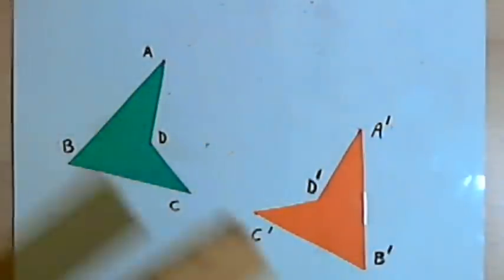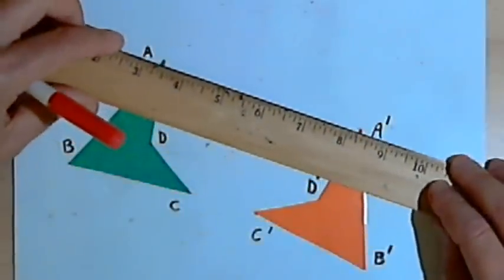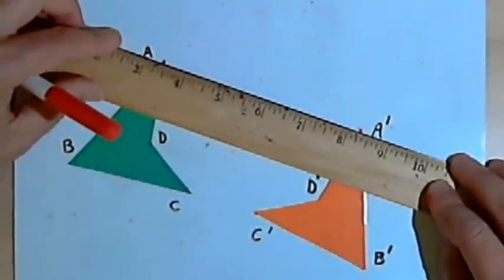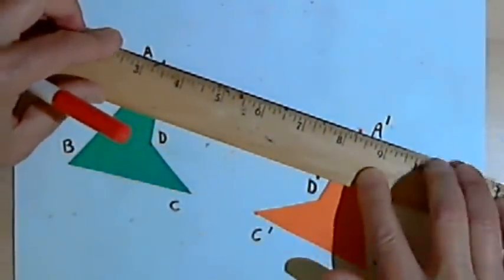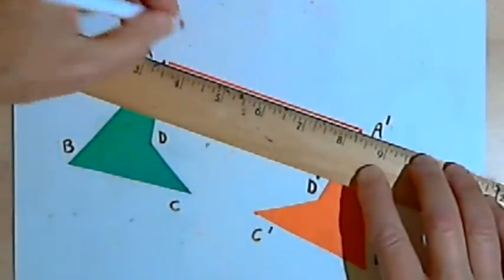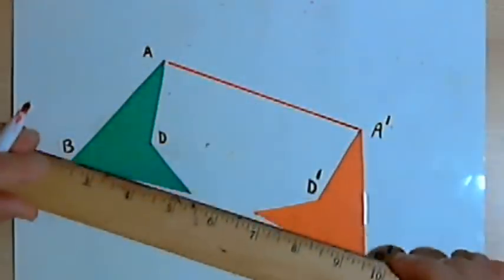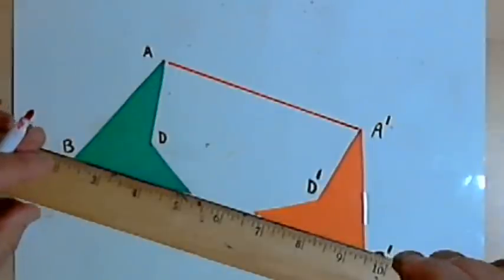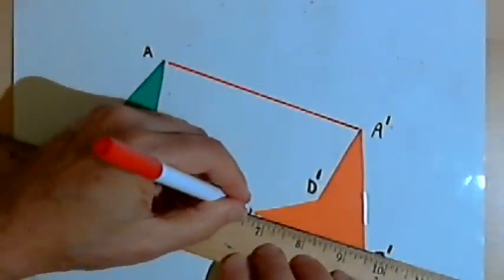This is a fairly simple process. What I'm going to do is take two pairs of corresponding points and connect them with a line segment. So I'll connect A and A prime, and then I'll connect points C and C prime.